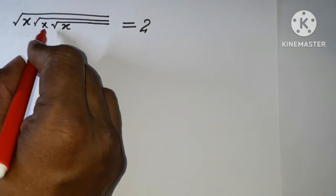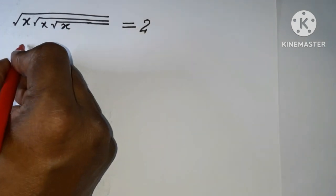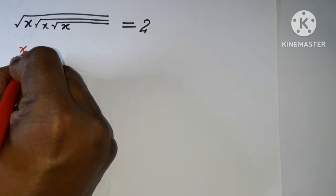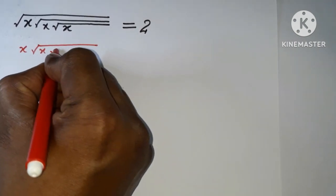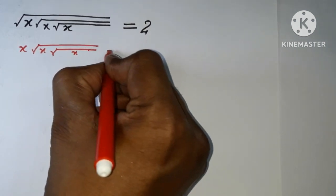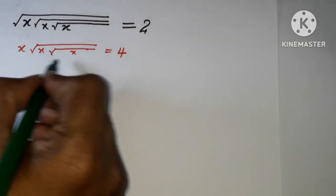Here I'm going to remove the root, so I'm going to put a square on both sides. I'm squaring, so it will be free from the root and we have this one remained, and here 2 squared is 4.